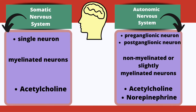There are some primary differences between the somatic nervous system and the autonomic nervous system. In the somatic nervous system, there is only one single neuron taking the response from the spinal cord to the effector organ, whereas in the autonomic nervous system there are two neurons — one called the preganglionic neuron and the other called the postganglionic neuron — with a ganglionic cell between them. In the somatic nervous system, the neuron is myelinated, whereas in the autonomic nervous system it is non-myelinated or sometimes slightly myelinated.